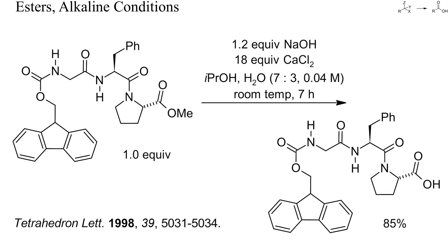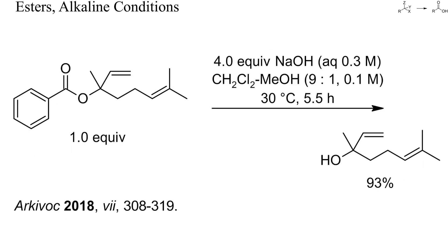After acidification, 85% of the target acid was obtained. Although it is often claimed that tertiary alkyl esters are resistant to alkaline saponification, this is not the case. In polar aprotic solvents, the hydroxide anion becomes strongly nucleophilic and capable of cleaving bulky esters and even amides. Here, a tertiary alkylbenzoate was saponified with sodium hydroxide in a mixture of dichloromethane and aqueous methanol, even without much heating.